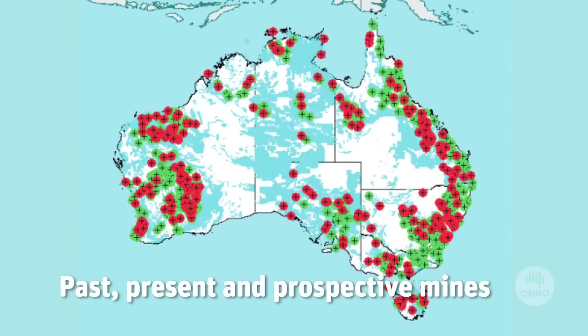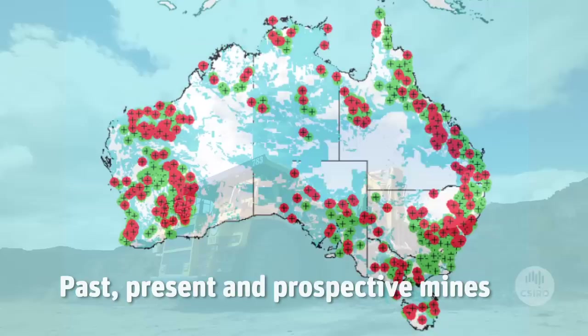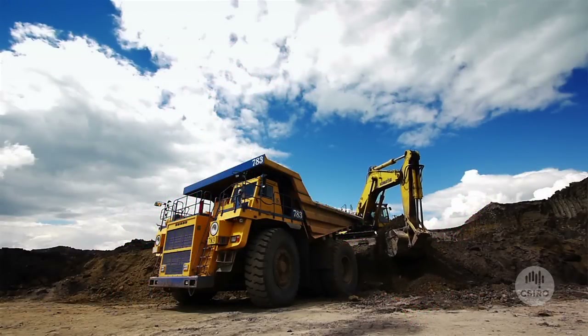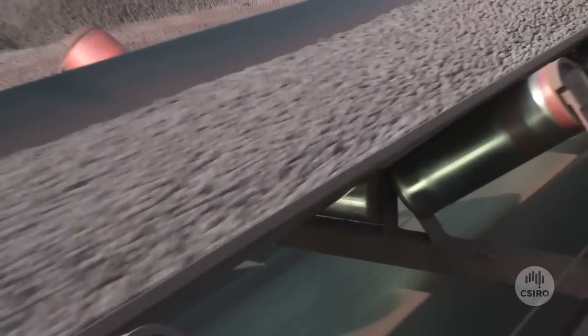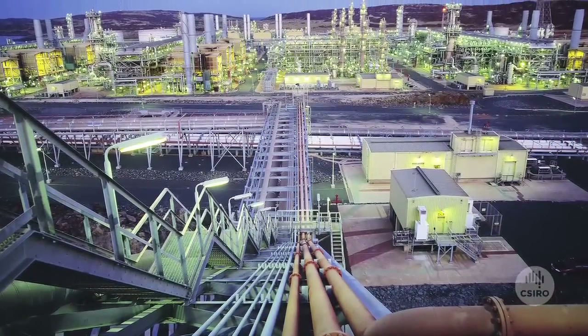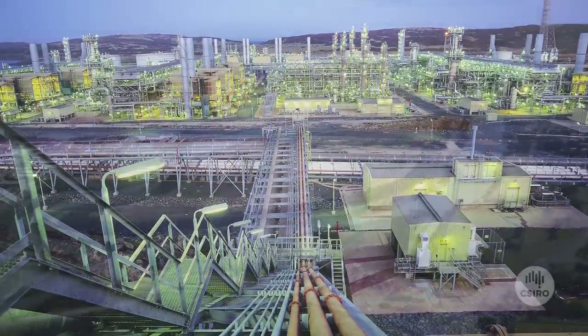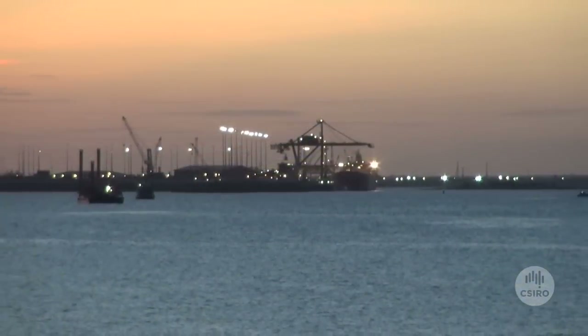Mining occurs throughout Australia but any individual mine is really small, so the total direct impacts on Australia cover less than 1% of the country. But it's not the impacts of an individual mine that's really the issue — it's the cumulative impacts of a number of mines, particularly in prospective regions. Often it's not the direct impacts of the mine sites themselves but the indirect impacts: all the infrastructure needed to service the mines — the roads, pipelines, towns, and ports — that often has the greater impact on biodiversity than the mines themselves.